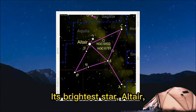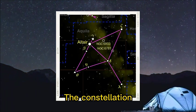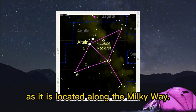Its brightest star, Altair, is a vertex of the Summer Triangle asterism. The constellation is best seen in the summer of the Northern Hemisphere as it is located along the Milky Way.